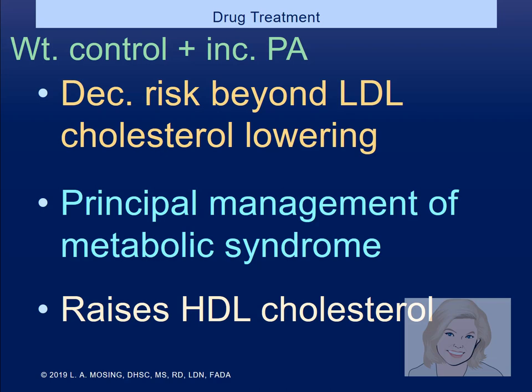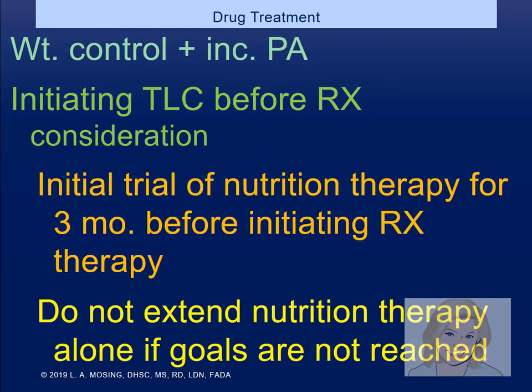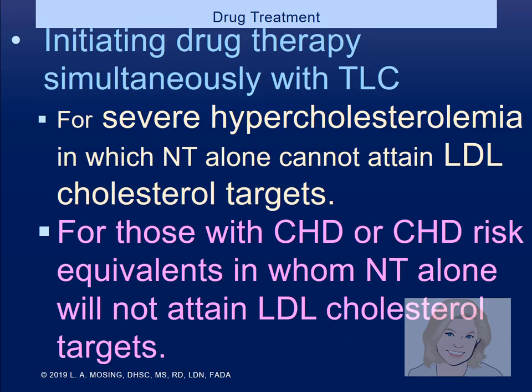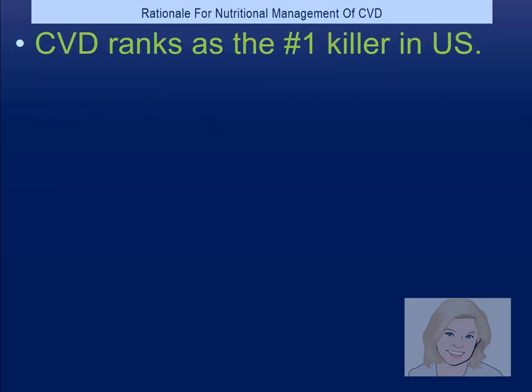For weight control: most patients who come in with high cholesterol carry more weight around their middle region and have high blood pressure. Weight control and increasing physical activity are our first choice — they can reduce risk beyond just LDL lowering. Patients will see their risk of metabolic syndrome drop, raise their HDL, and when they exercise they get those extra HDL benefits that help reverse the process. If drug treatment is needed, they still need to follow a healthier diet.